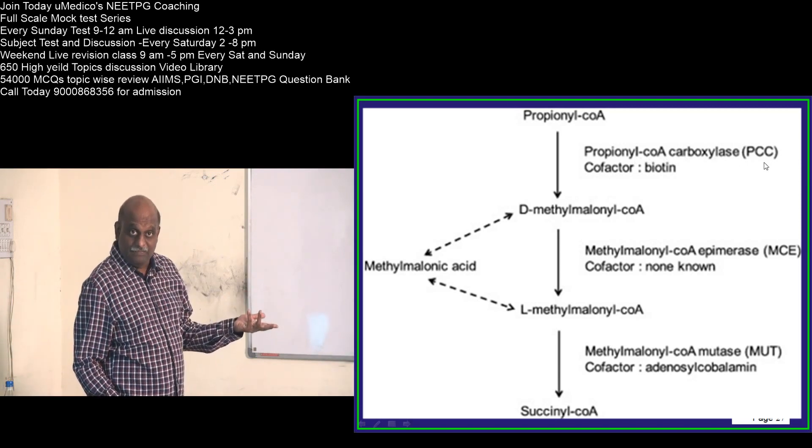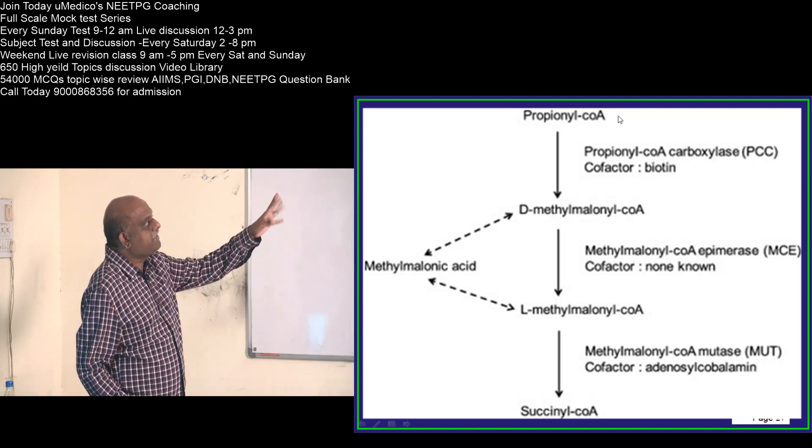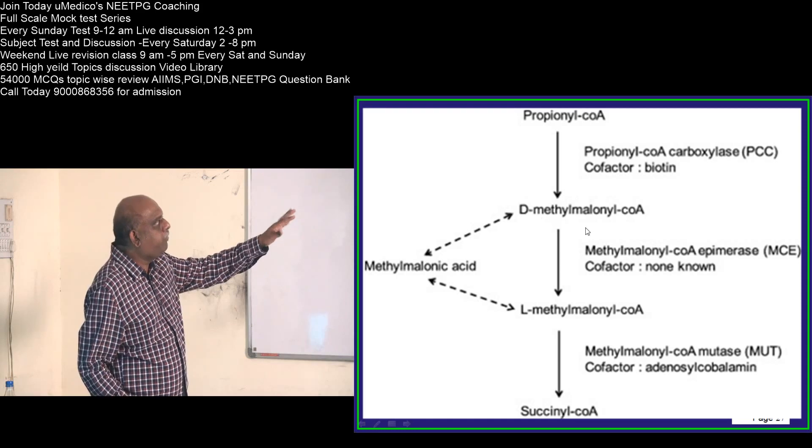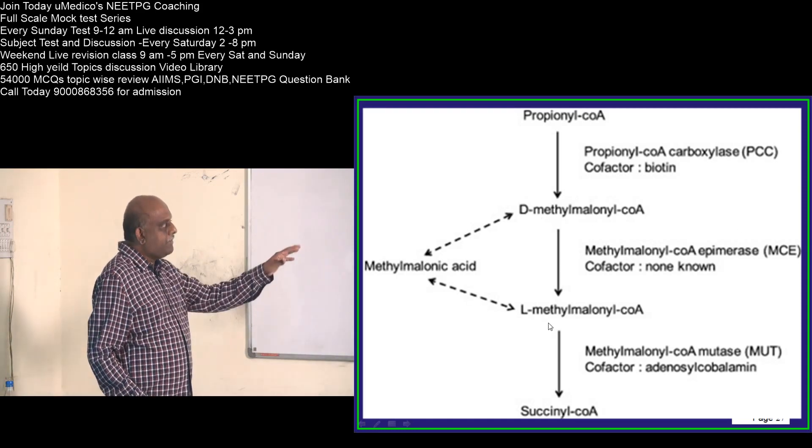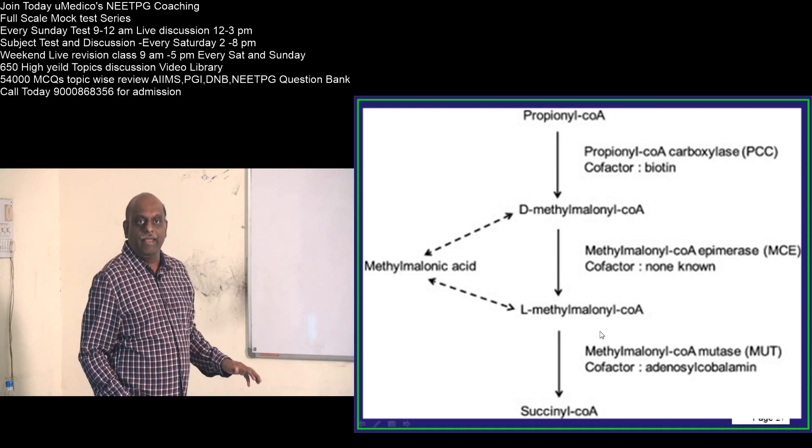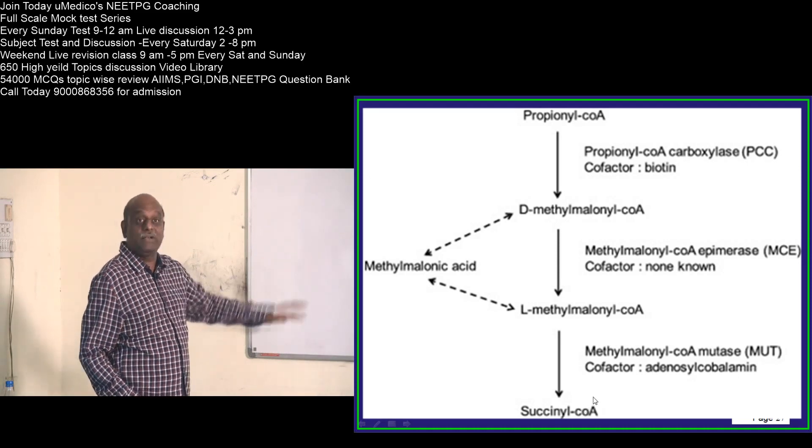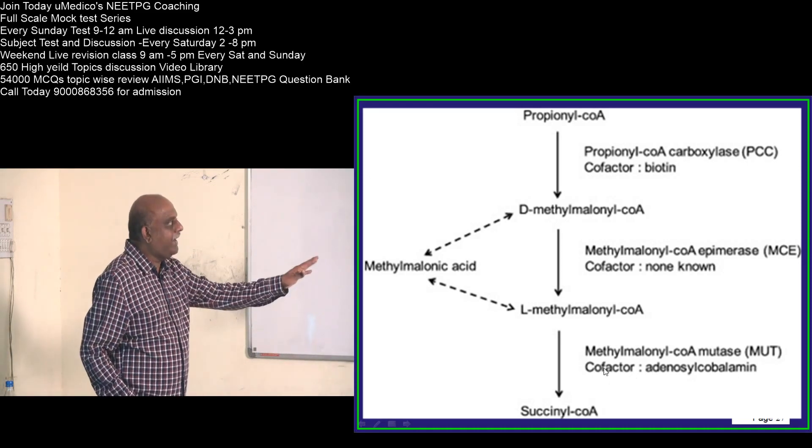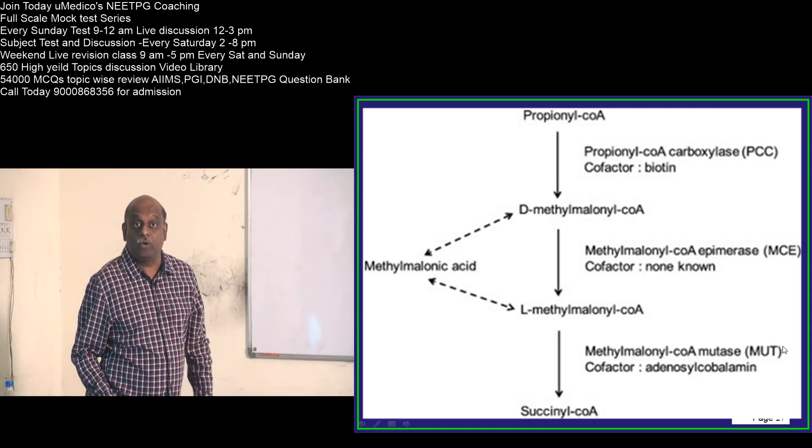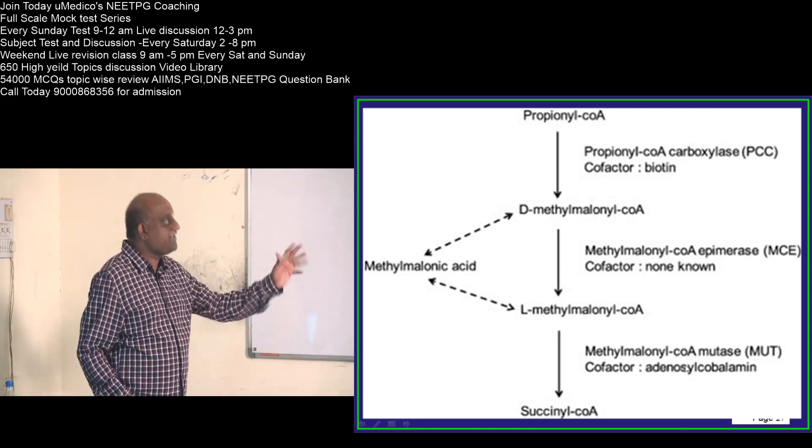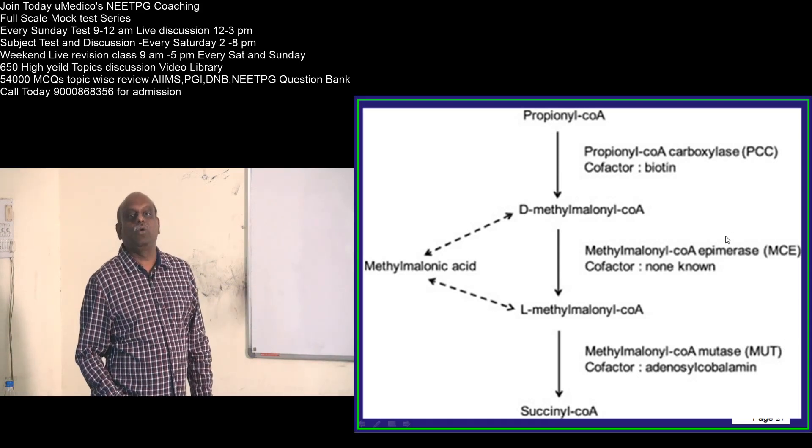That propionyl-CoA to become succinyl-CoA, you require one biotin cofactor coenzyme called propionyl-CoA carboxylase, which converts this 3 carbon propionyl-CoA into a 4 carbon methyl malonyl-CoA. And that methyl malonyl-CoA, L-methyl malonyl-CoA becoming succinyl-CoA, you require the methyl malonyl-CoA mutase for which the vitamin B12 is the cofactor.